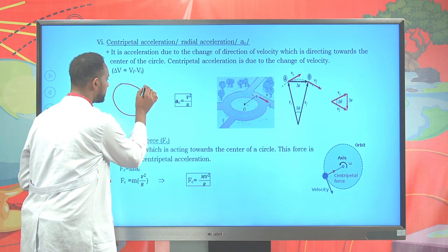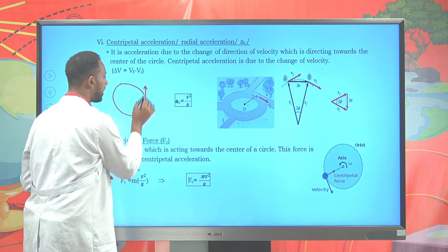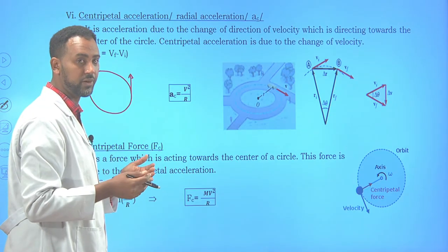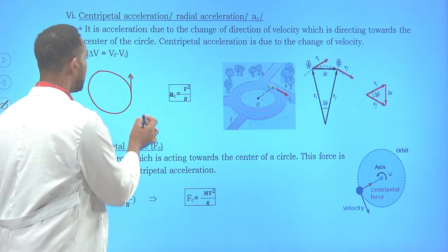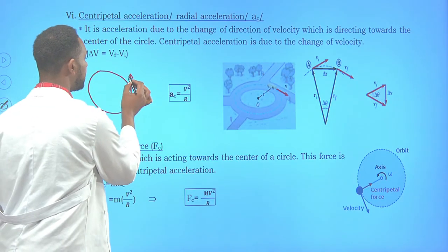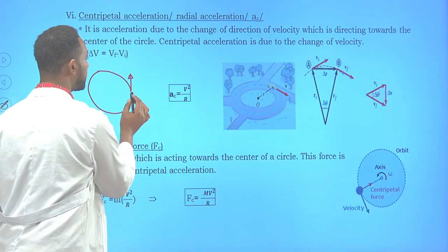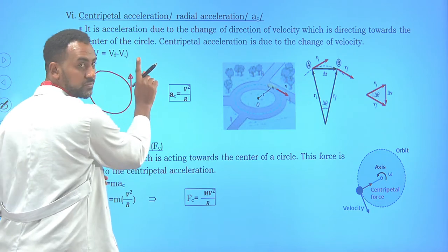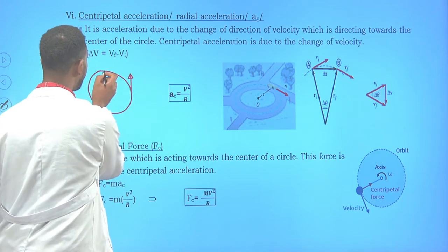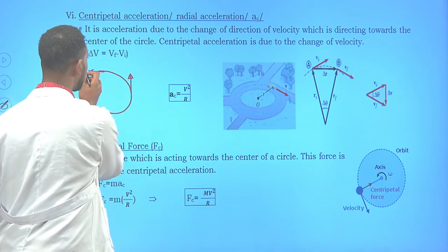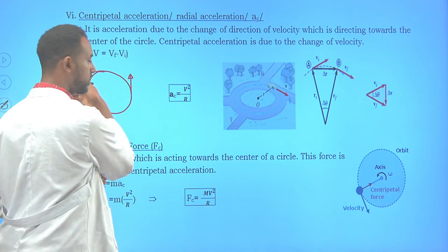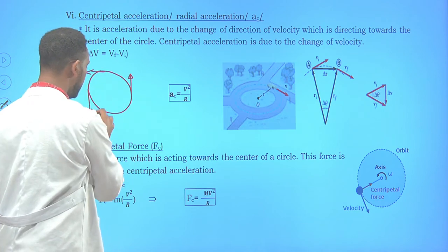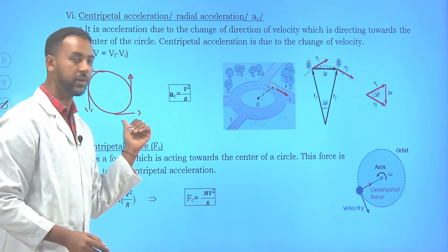Say this particle is moving at 10 meters per second — that is the tangential velocity. At each point on the circle, the velocity direction changes: at one point it acts upward, then to the left, then downward, and so on.